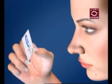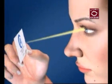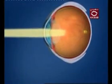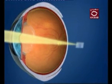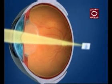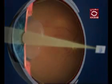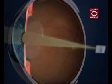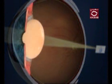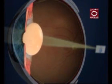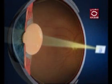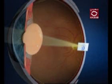Rays of light from near objects are divergent in nature and will come to a focus behind the retina. In order for this light to focus on the retina, accommodation occurs. During accommodation, the ciliary muscle contracts, causing the crystalline lens to assume a more convex shape, which refocuses light back onto the retina.